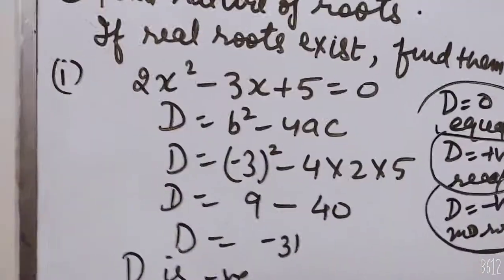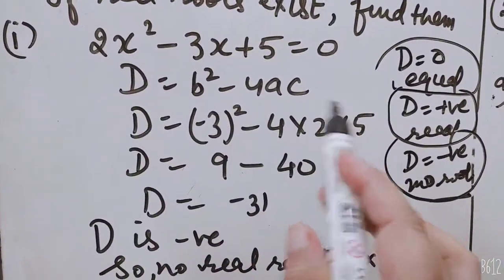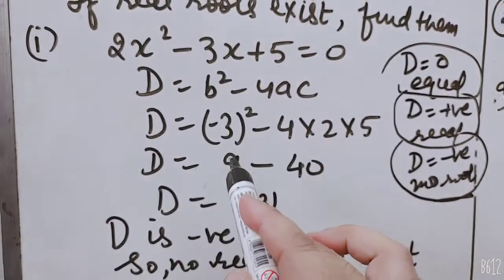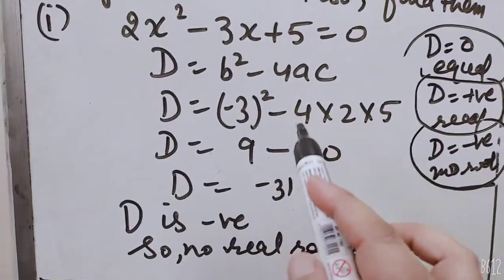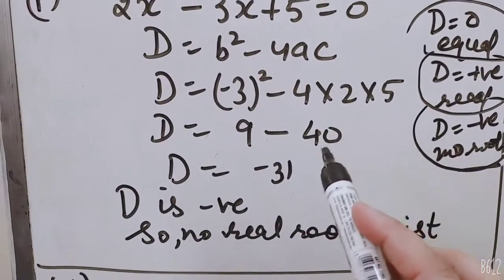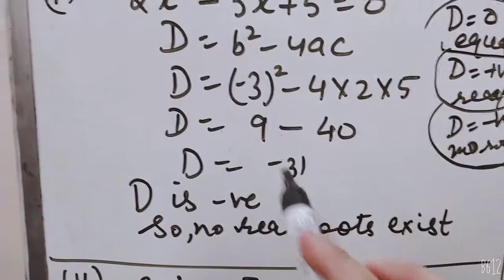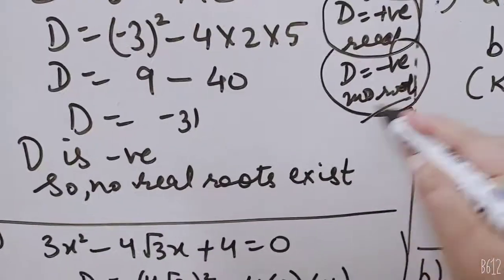So what I will do in the first question, first of all, find D. D is equal to b squared minus 4ac. This formula, b value minus 3 and a value 2, c value 5. Minus 3 squared is 9, 4 times 2 times 5 is 40, minus 40. 9 minus 40 is minus 31. Now D is negative. If D is negative, then no real roots exist.